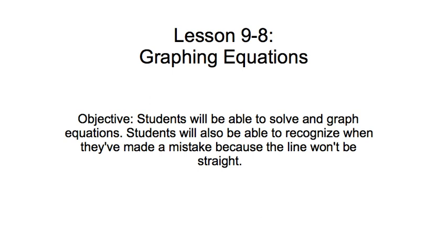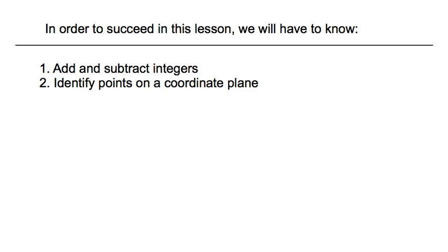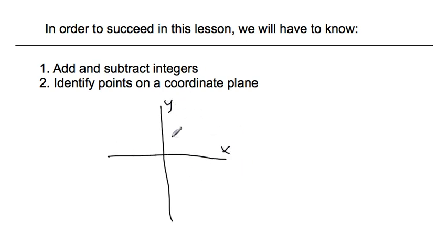Each one of those steps must be handled separately, and in the end you'll see that you end up with a straight line. But to get there you have to go through a whole series of things. In order to succeed in this lesson, you're going to have to know how to add and subtract some integers, then identify some points on a coordinate plane. Remember, a coordinate plane is when you have an x and y axis.